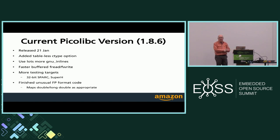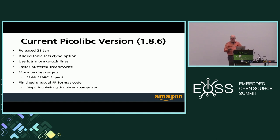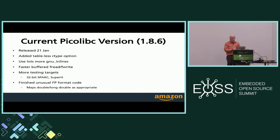The current picolibc version is 1.8.6. The versioning is kind of random — the '1' basically says the API is never changing, because it's got a standard behind it. The other two numbers change at my whim. Since the API never changes, semantic versioning doesn't make much sense here. This version was released on January 21st.